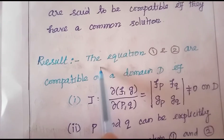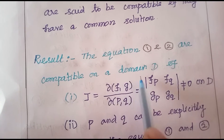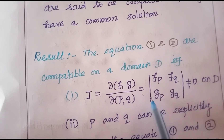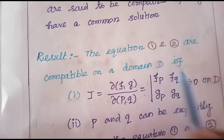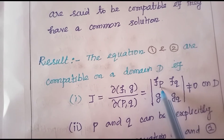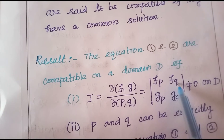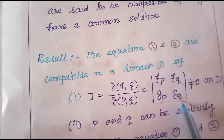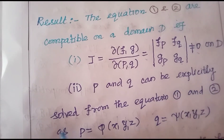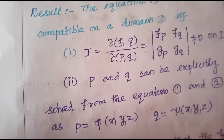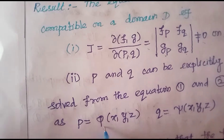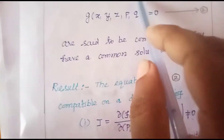The result: equations 1 and 2 are said to be compatible on the domain D if the Jacobian ∂(f,g)/∂(p,q), which can be written as the determinant |fp, fq; gp, gq| — where fp means partial differentiation with respect to p, fq with respect to q, gp with respect to p, gq with respect to q — is not equal to zero. Then p and q can be explicitly solved from equations 1 and 2 as p = π(x,y,z) and q = ψ(x,y,z).